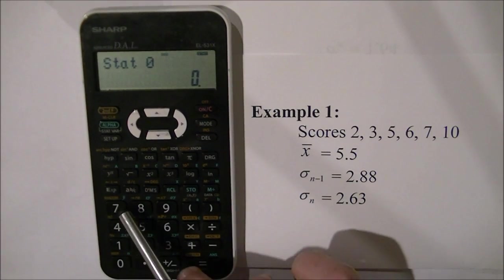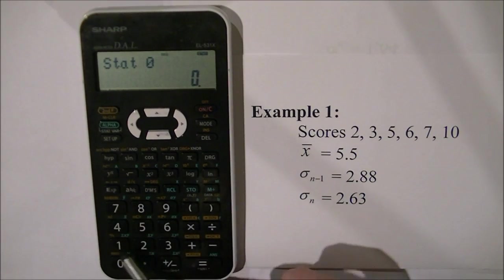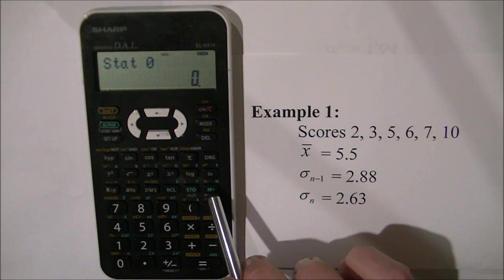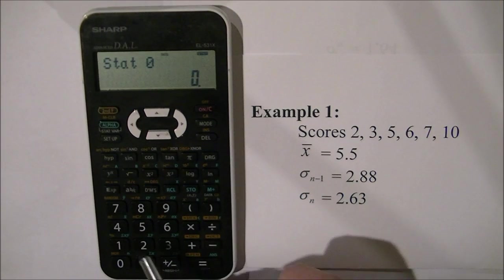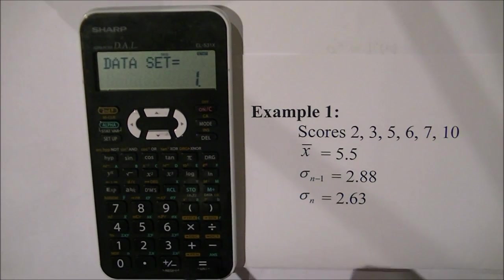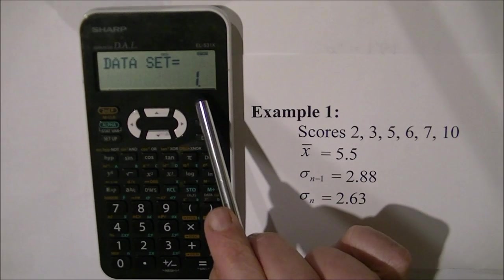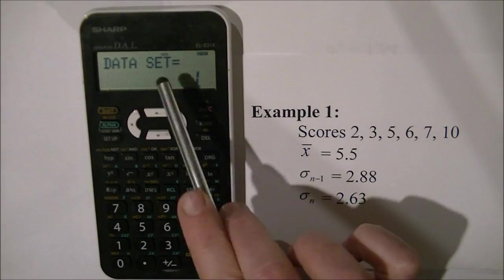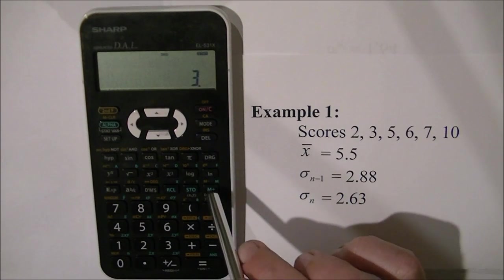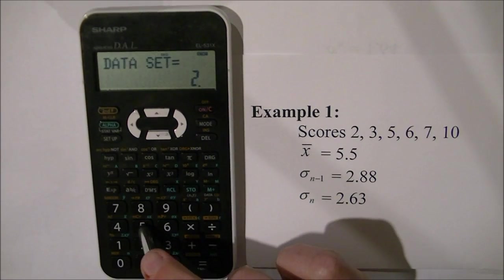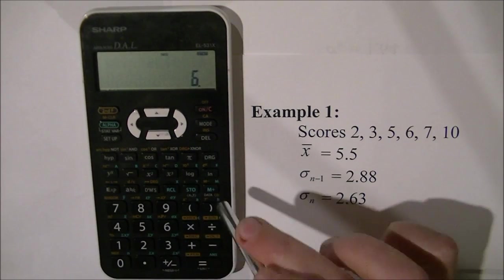The buttons that I need are the number pad to enter the scores and M plus to enter each score into the calculator. So I press 2, M plus, and it tells me I've got one piece of information in the data set. I press 3, M plus, 5, M plus, 6.